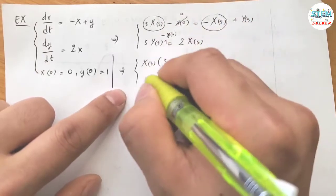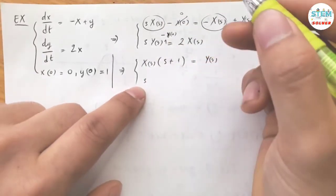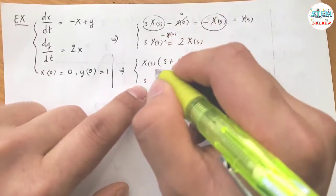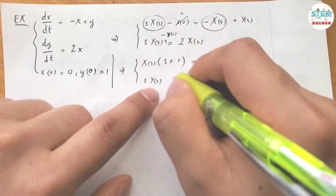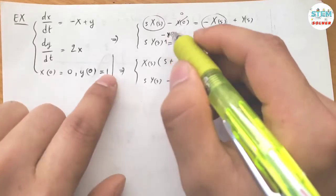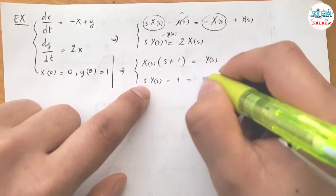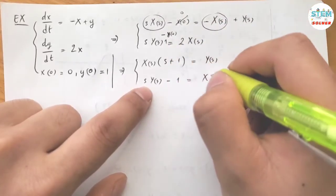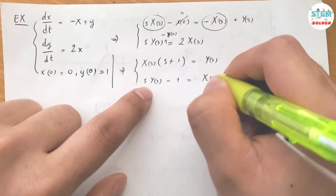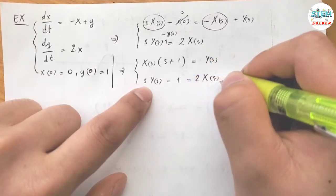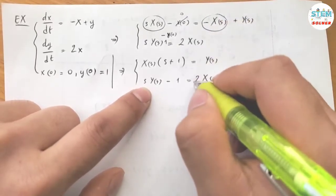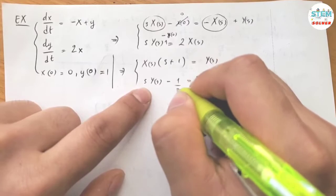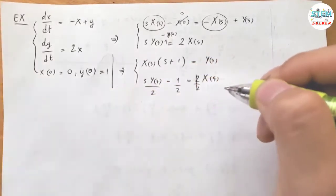For this one, you have S capital Y of S minus Y of 0 equals 1, equals 2 capital X of S. I'm going to isolate capital X of S, so I'm going to divide both sides by 2.